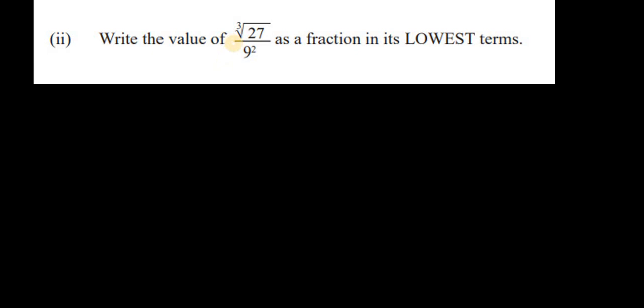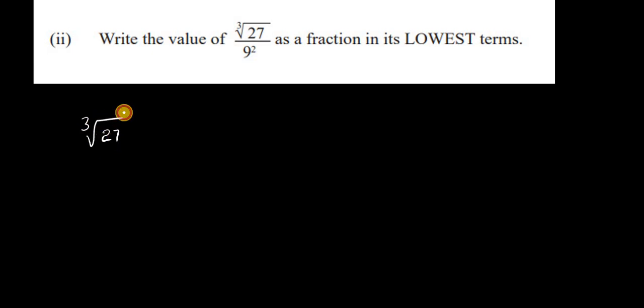For the next question, we're asked to write the value of the cube root of 27 over 9 squared as a fraction in its lowest terms. The cube root of 27 — the radical symbol refers to the square root or higher-order root of a number, in this case the cube root since we have a 3. This means: what number, multiplied by itself three times, gives us 27?